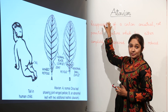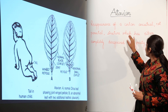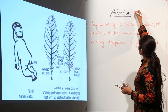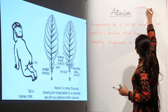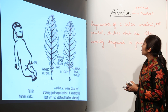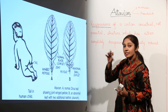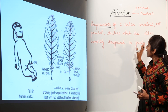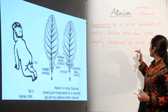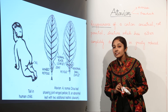Let us discuss the term atavism. Atavism means the reappearance of a certain ancestral — not parental — structure which has either completely disappeared or greatly reduced. The word atavism means reversion or throwback. So when such ancestral characters reappear, this is known as atavism.